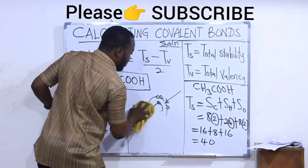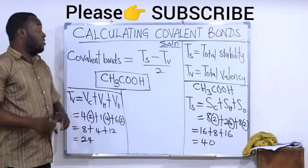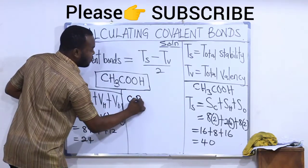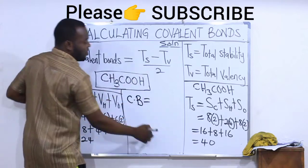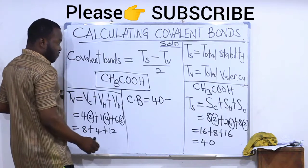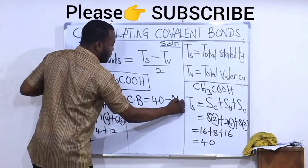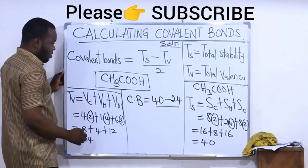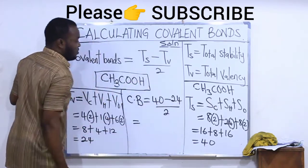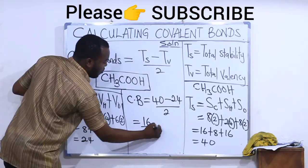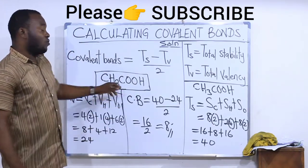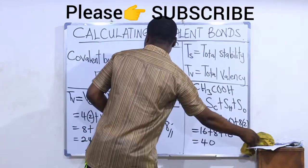Now that I have gotten my total stability and my total valency, I can now calculate the number of covalent bonds. So my covalent bonds will be equal to total stability, which is 40, minus total valency, which is 24, divided by 2. And that will give us 16 all over 2. So our final answer is 8 covalent bonds. There are a total of 8 covalent bonds in ethanoic acid.